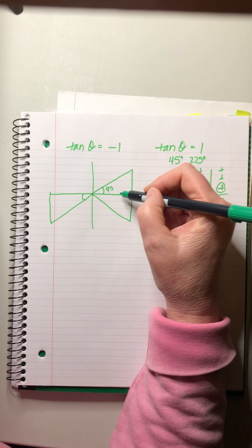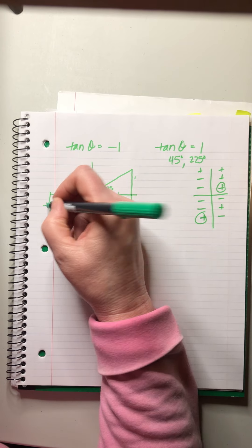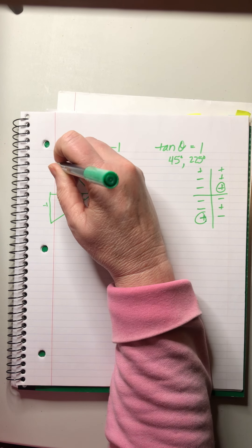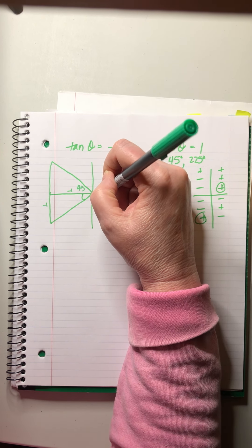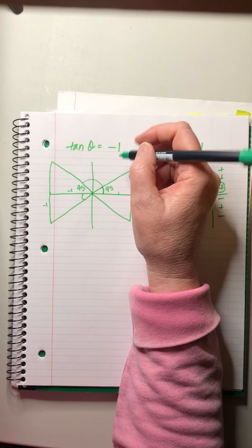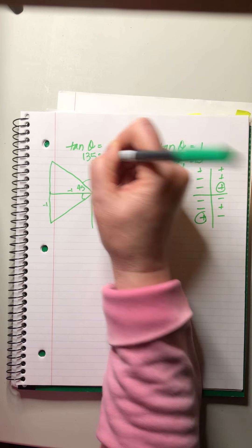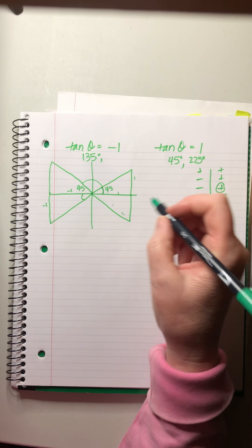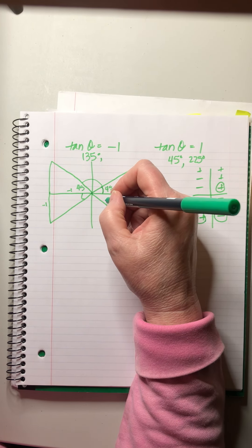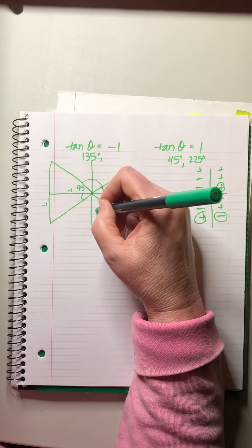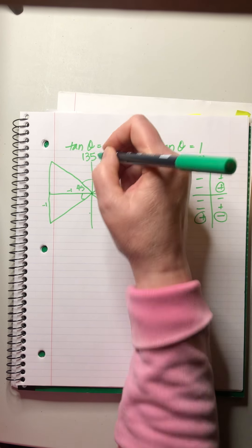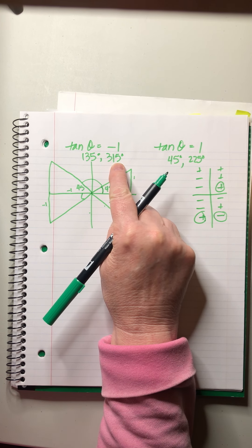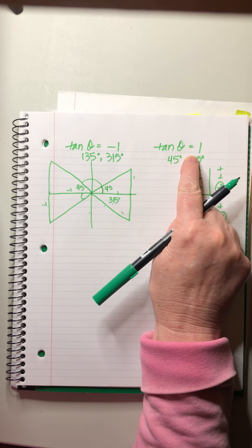That gives us positive tangent in Q1 (positive/positive) and Q3 (negative/negative). For tangent of negative one, the angles are in Q2 and Q4: 180° - 45° = 135°, and 270° + 45° = 315°. So the four angles giving tan θ = +1 or tan θ = -1 are 45°, 135°, 225°, and 315°.